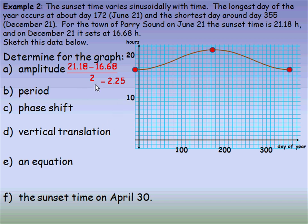To determine the period, the cycle is an entire year, so the period should be 365 days.